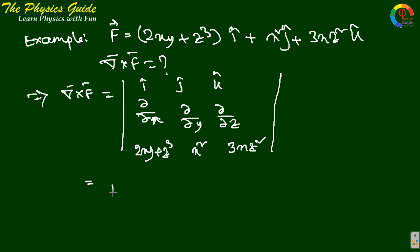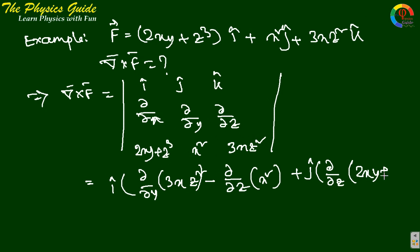This is i cap del/del y of 3xz² minus del/del z of x². Plus j cap del/del z of (2xy + z³) minus del/del x of 3xz².